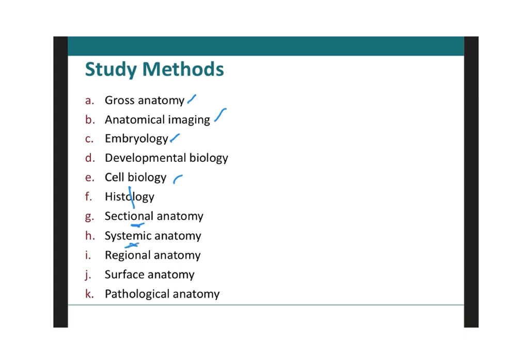Systemic anatomy, as the name says, has to do with systems — it studies the structure of specific systems of the body, such as the nervous system, the respiratory system, and all the organ systems we have. Regional anatomy has to do with specific regions of the body. For example, in the chest region we have the lungs belonging to the respiratory system and the heart belonging to the cardiovascular system — different organ systems located in the same region. That's why it's called regional anatomy.